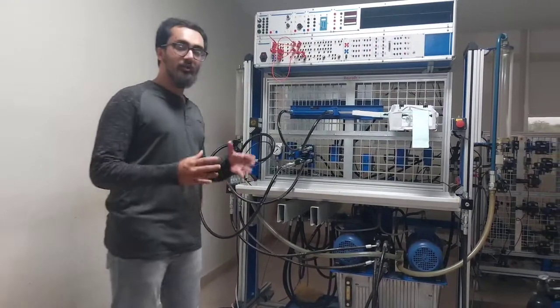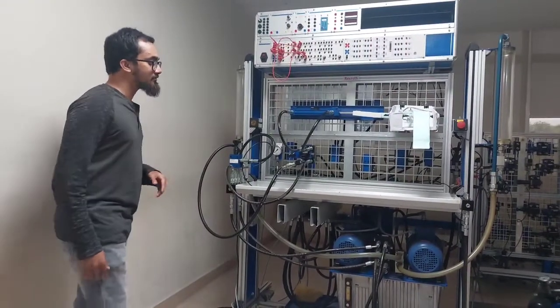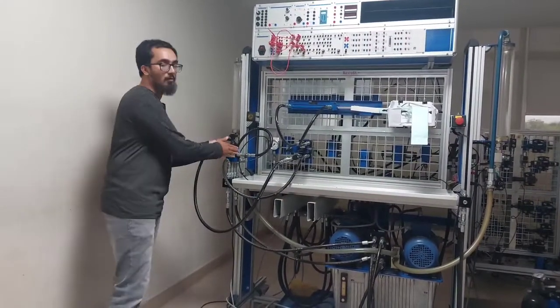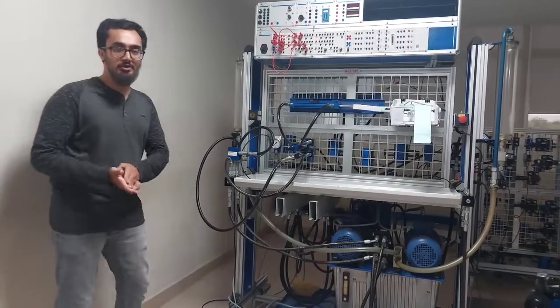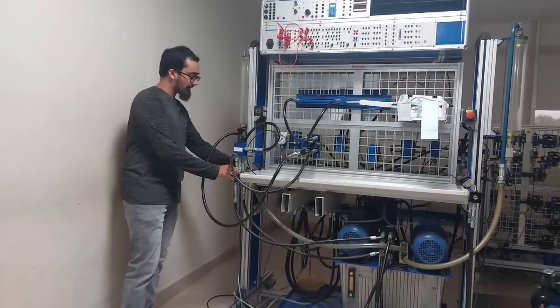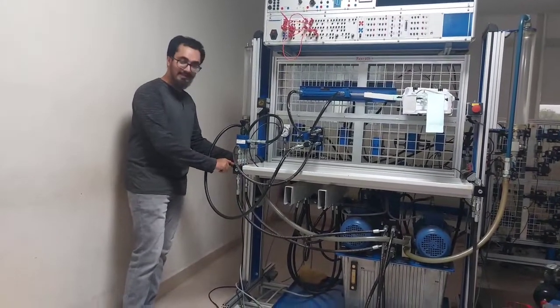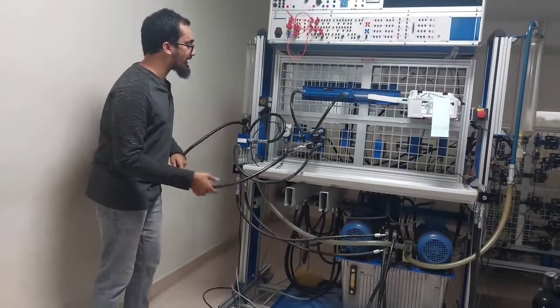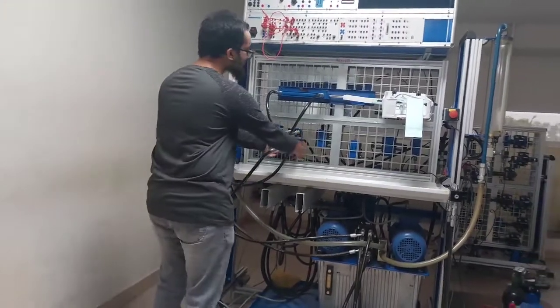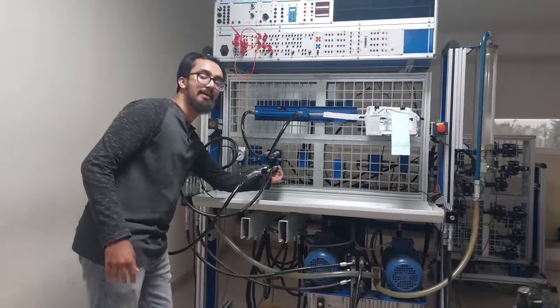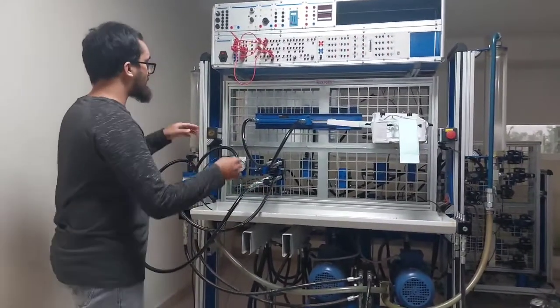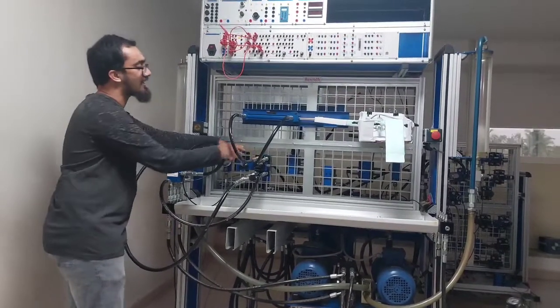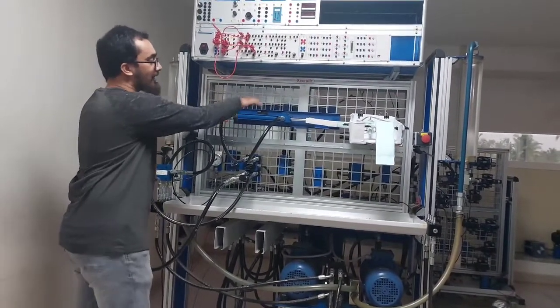My name is Syed. I will be talking about the working of the test rig. The pump sucks the oil from the reservoir, then it flows to the pressure relief valve where it regulates the pressure in the system. This is the input P port and this is the output T which is connected to the directional control valve input P and output T respectively. And similarly, the input A and output B of the directional control valve is connected to the double acting cylinder port A and B respectively.